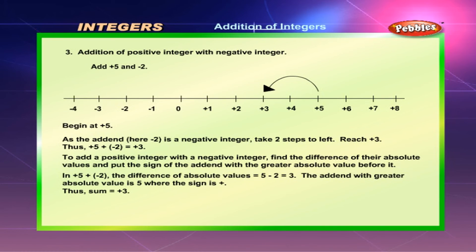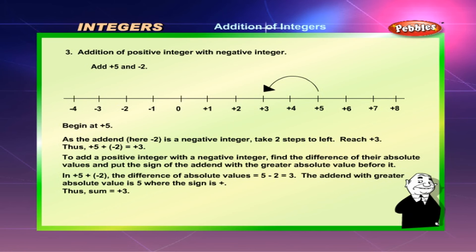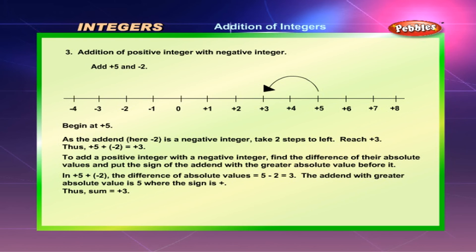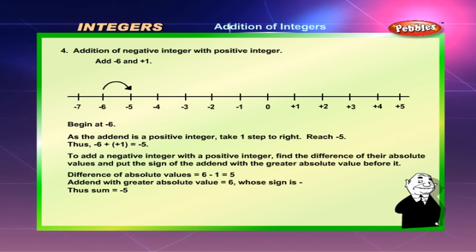Addition of positive integer with negative integer. Add plus 5 and minus 2. Begin at plus 5. As the addend is a negative integer, take two steps to the left. Reach plus 3. Thus, plus 5 plus minus 2 is equal to plus 3. To add a positive integer with a negative integer, find the difference of their absolute values and put the sign of the addend with the greater absolute value before it. The difference of absolute values is 5 minus 2, which equals 3. The addend with the greater absolute value is 5, whose sign is plus. Thus, the sum is equal to plus 3.